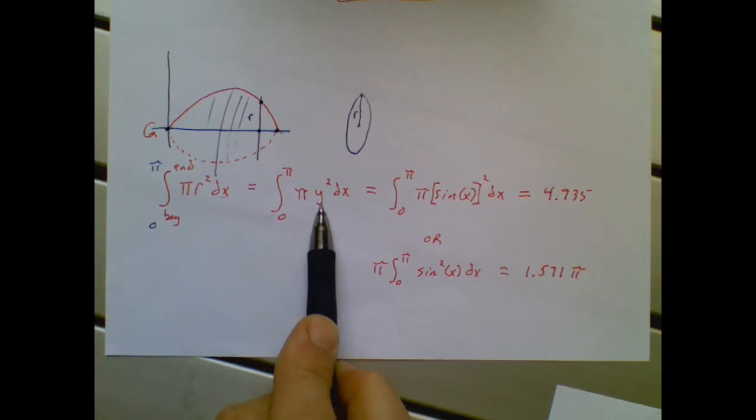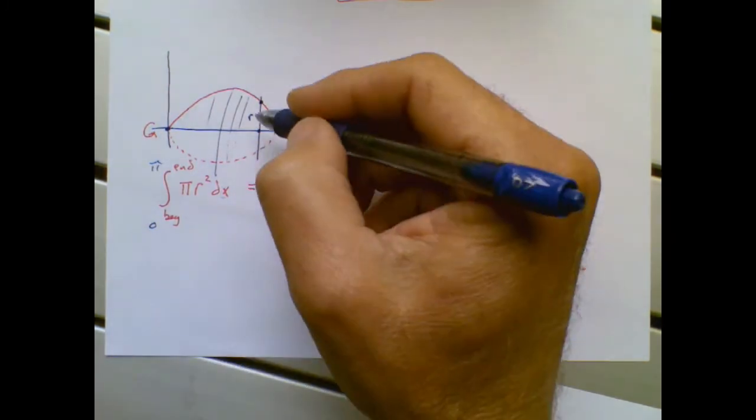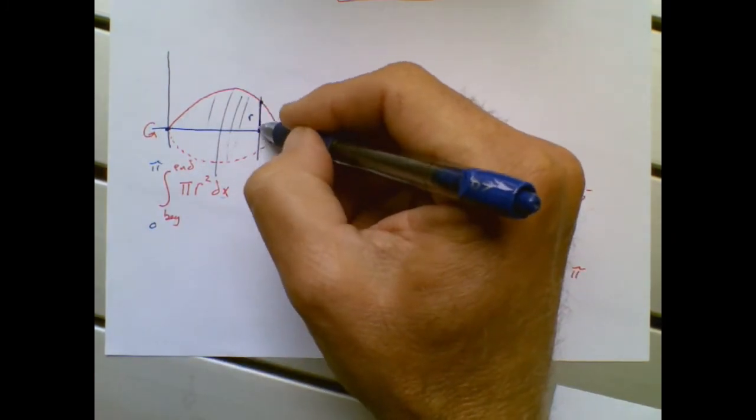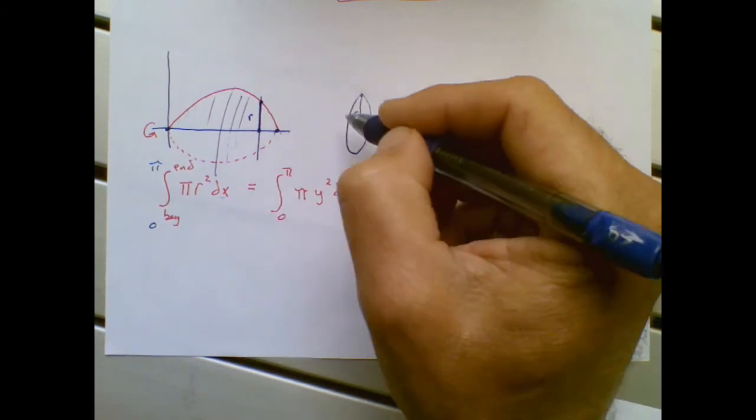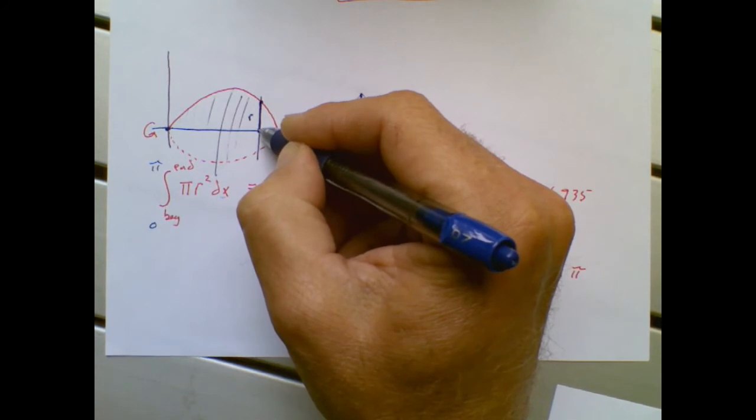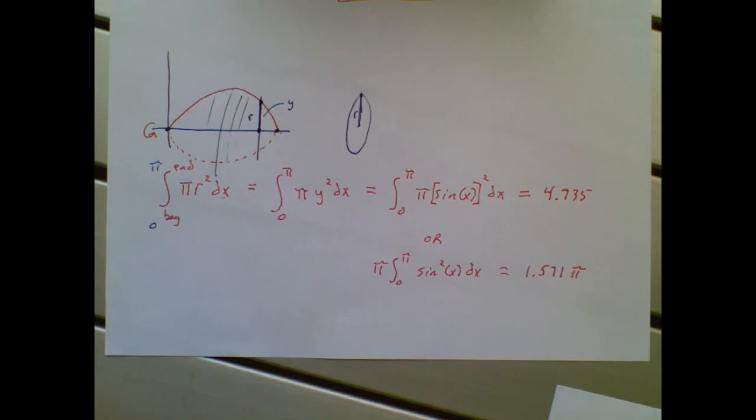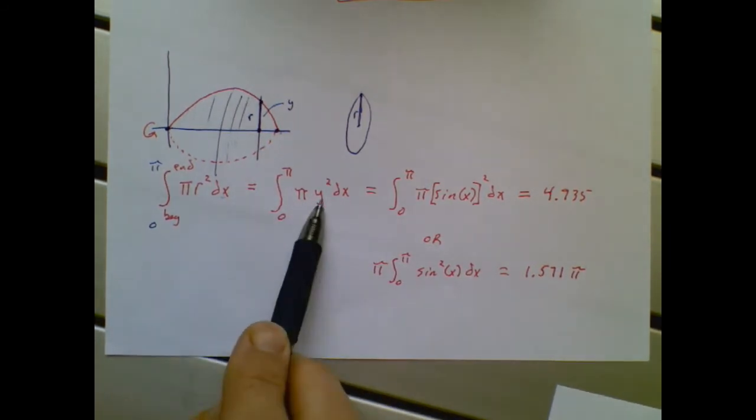Well, that y is really this radius. Because if I think about this radius, right there, that's a y-value. Because it's a distance from the x-axis up to a function, that's a y-value in algebra. So instead of writing r-squared, I write y-squared. But notice that this is a y, and we've said this is a dx problem.